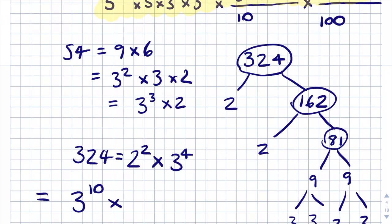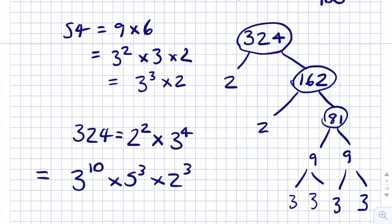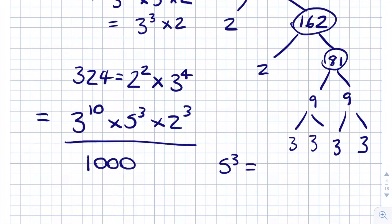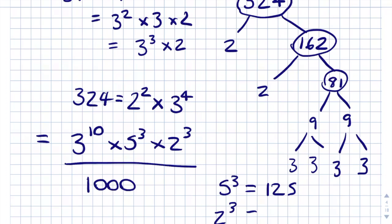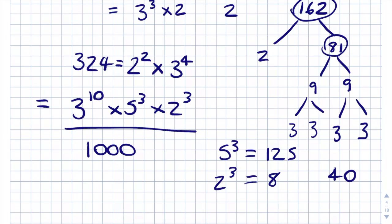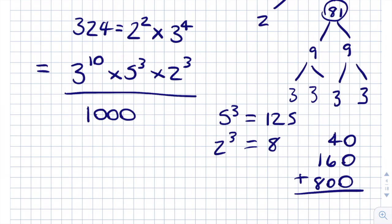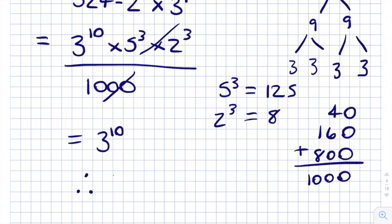Multiplying the remaining terms: 5 squared times 5 is 5 cubed, and 2 times 2 squared is 2 cubed. All divided by 10 times 100, which is 1000. Now 5 cubed is 125 and 2 cubed is 8. 8 times 125 is 1000, which cancels with the denominator 1000. We're left with 3 to the power of 10. That is answer B. Therefore answer equals B.